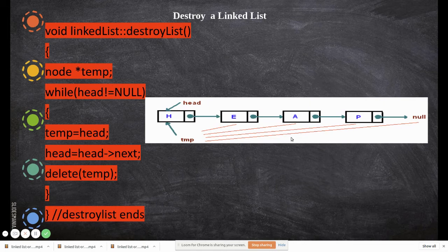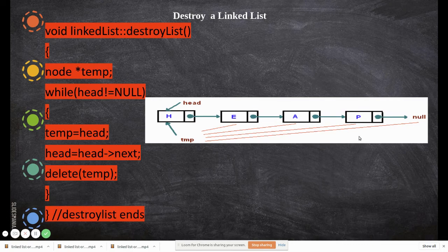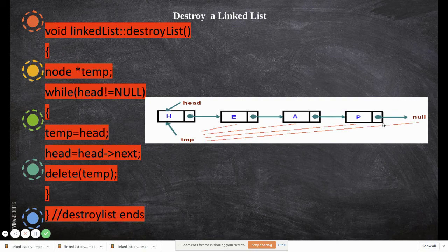Again we make the temporary pointer point to head, then move head to point to the next node, and delete the node pointed by temp. Once more we check whether head is equal to null — it is not, it is still pointing to the last node. So we make temp point to that node and move head to head next, which is null. Then we delete that last node.